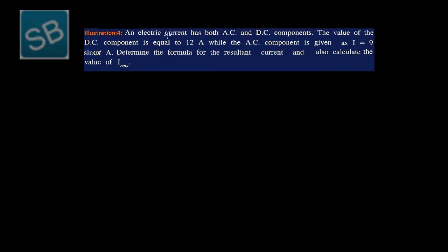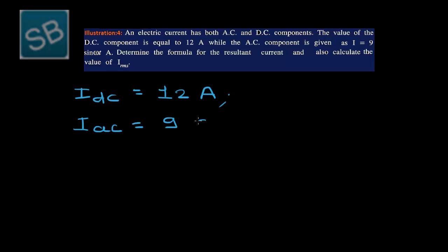Starting illustration 4: an electric current has both AC and DC components. The DC component IDC equals 12 ampere, which is constant and does not change with time. The AC component IAC equals 9 sin(ωt) ampere — a sinusoidal function. Whenever there is AC current, it will have either a sinusoidal or cosine function.